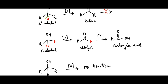Secondary alcohols only have one proton at the alpha position, so they can only be oxidized once, forming a ketone. Generally, the ketone is not further oxidized, though special oxidizing agents can oxidize a ketone into an ester. Primary alcohol has two protons at the alpha position — the carbon atom bearing the hydroxyl group — so primary alcohols can be oxidized twice. The first oxidation produces an aldehyde, which still has one hydrogen attached and then undergoes oxidation to produce a carboxylic acid. Tertiary alcohols do not have any protons at the alpha position and generally do not undergo oxidation.